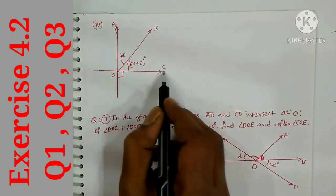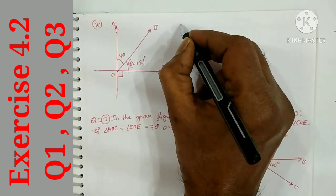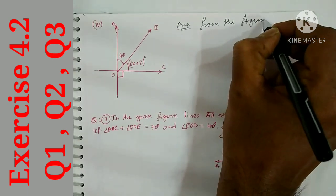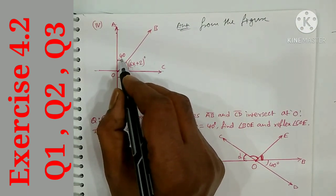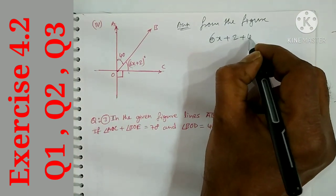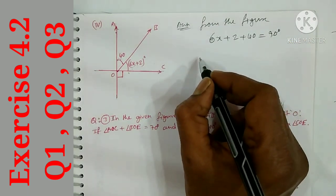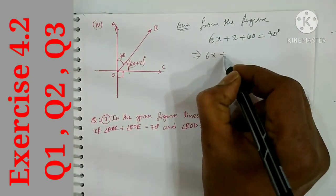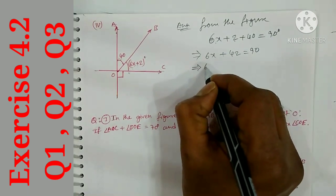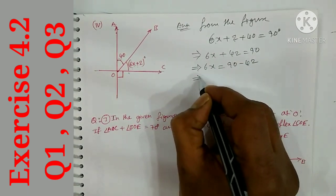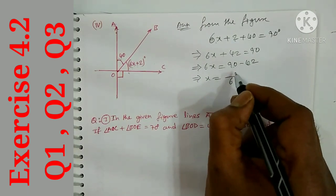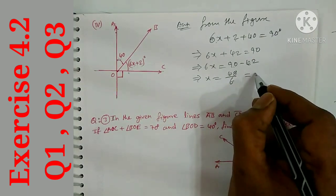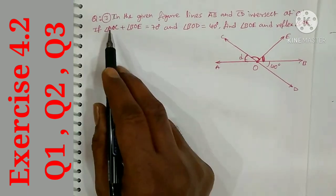Part (d): This is the x-axis and y-axis forming a 90-degree angle. So the two angles are complementary. From the figure: 6x + 2 + 40 = 90 degrees. So 6x + 42 = 90, then 6x = 90 - 42 = 48, therefore x = 48 ÷ 6 = 8 degrees.